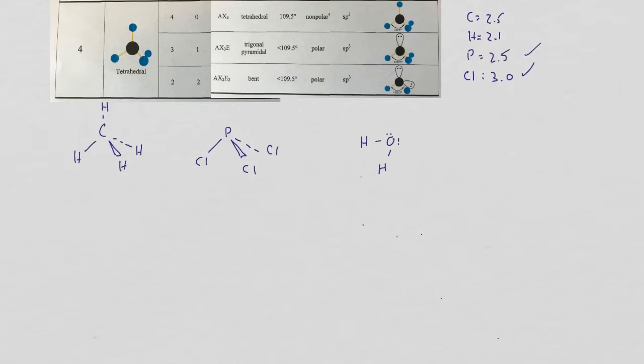If something has four domains, it's going to have tetrahedral electron geometry. The angles for those are going to always be 109.5, or a little bit less, depending on how many lone pairs there are on the central atom. For CH4, there's no lone pairs, just four domains, and you get what's called a tetrahedron, or tetrahedral electron geometry.